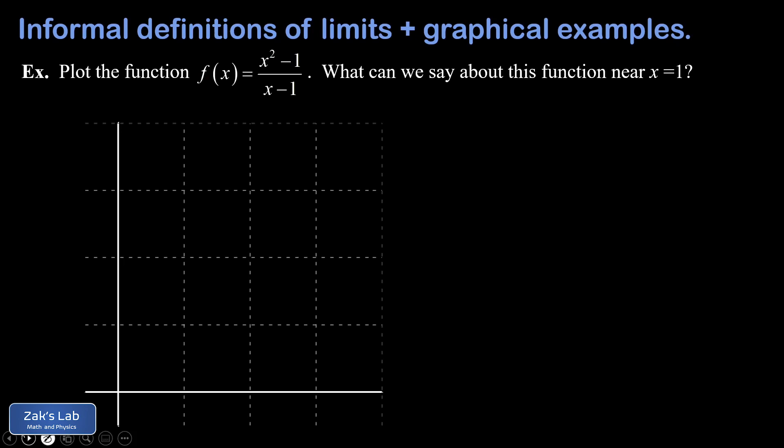In our opening example we're given a rational function x squared minus 1 divided by x minus 1, and we're asked to plot this function and comment on the behavior near x equals 1. To graph this, we immediately notice there's a problematic value of x, which is 1, because the denominator vanishes there. So we know this point needs to be thrown out of the domain.